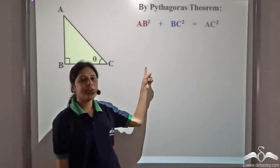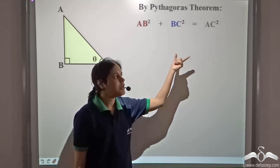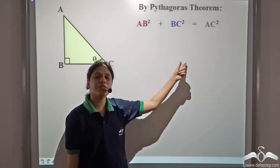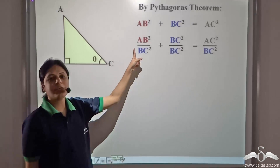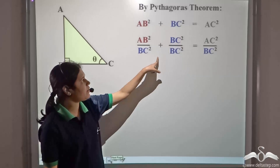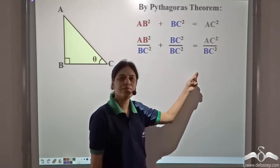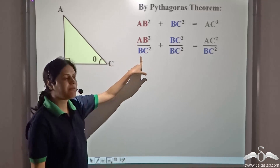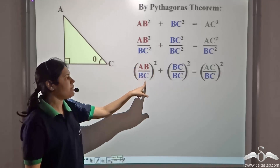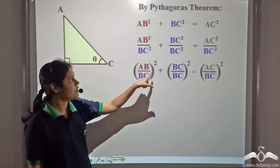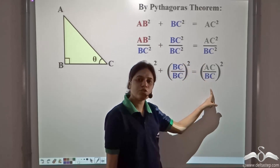Now, earlier we had divided the three terms by AC². Now, let us divide the three terms by BC². So, we get: AB²/BC² plus BC²/BC² equal to AC²/BC². Now, AB²/BC² can be written as (AB/BC)². So, we have (AB/BC)² plus (BC/BC)² equal to (AC/BC)².